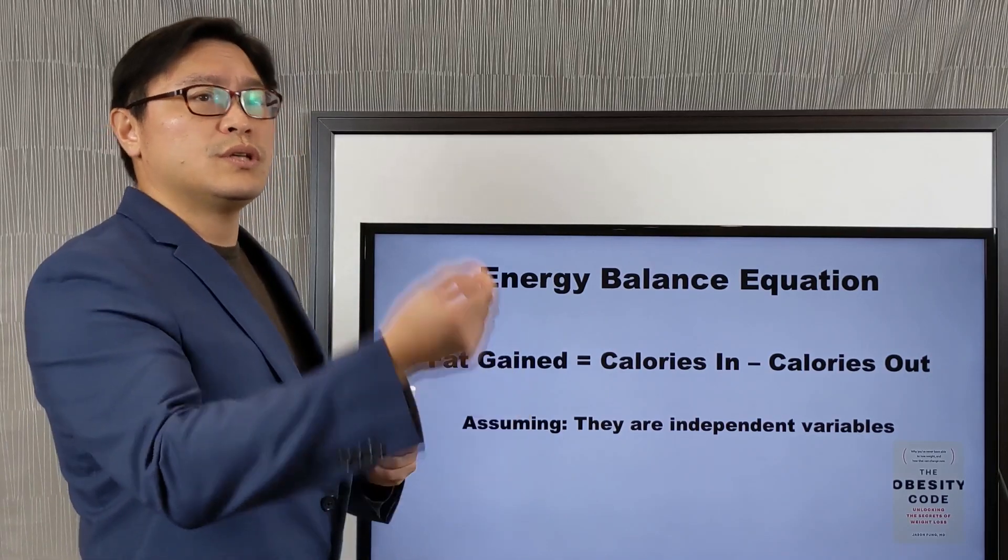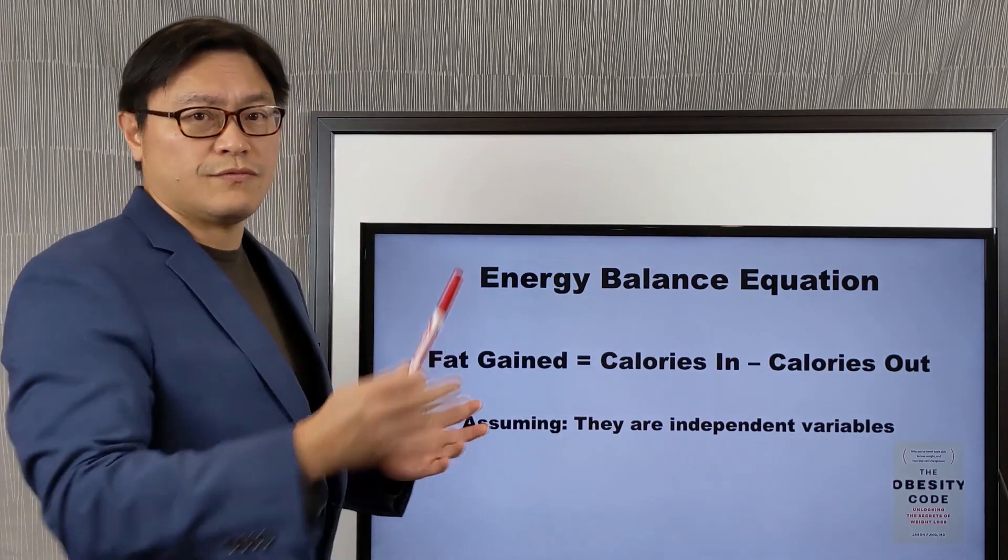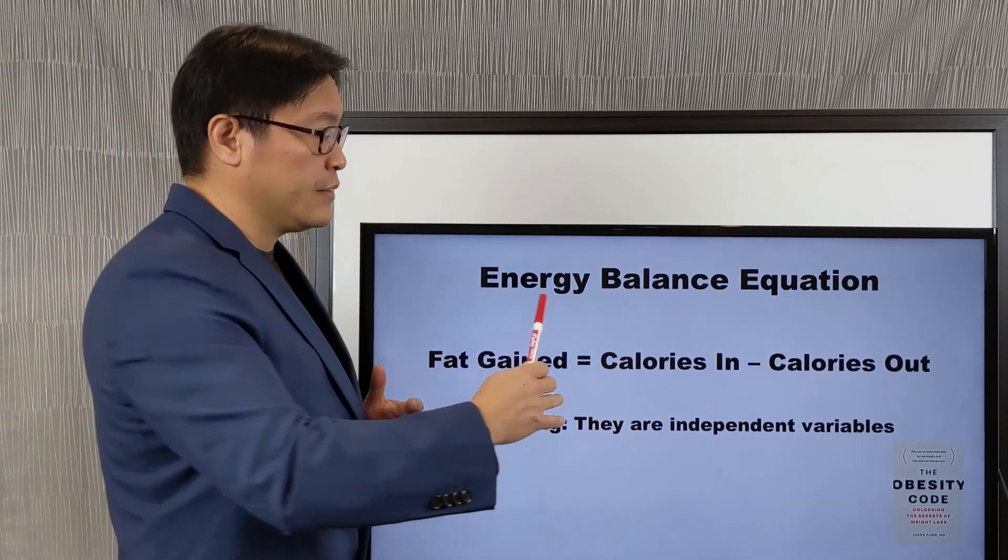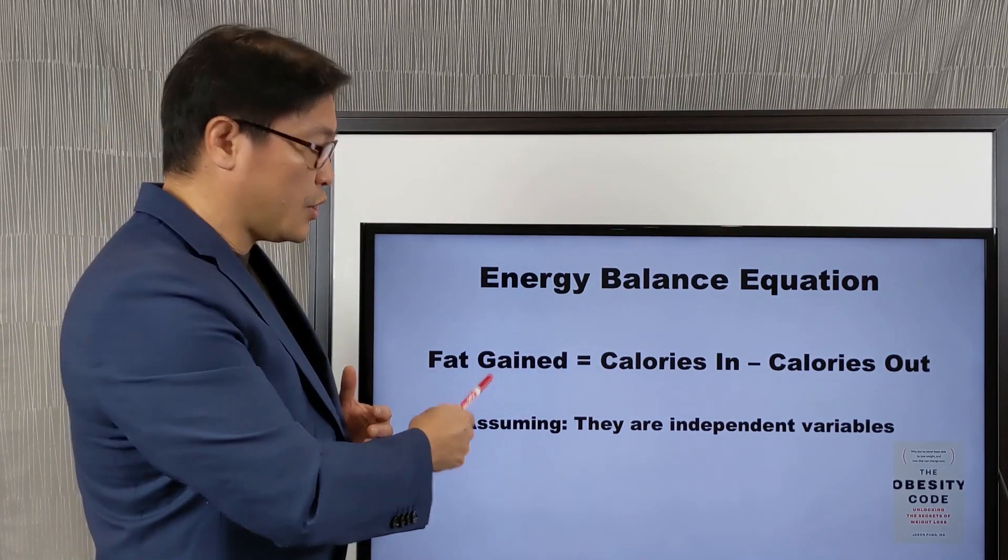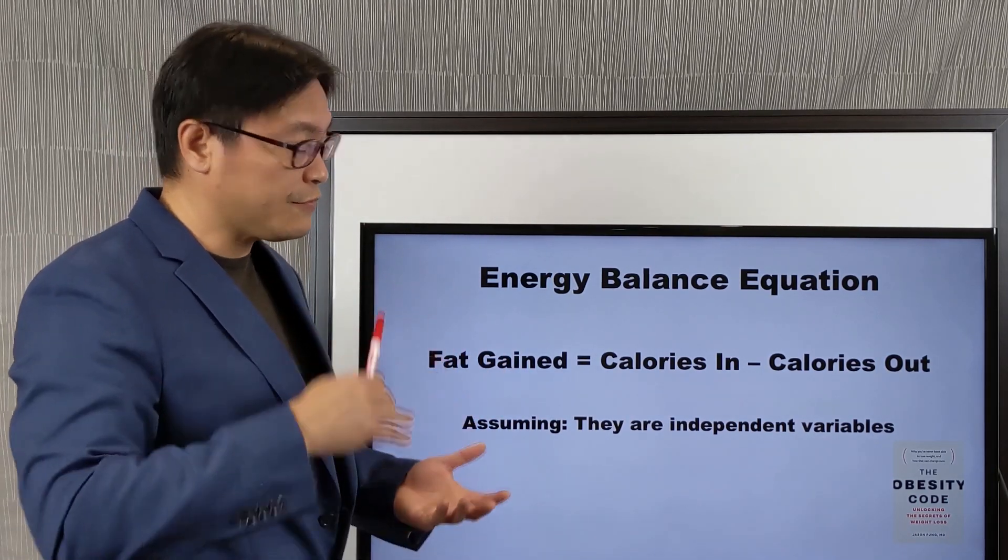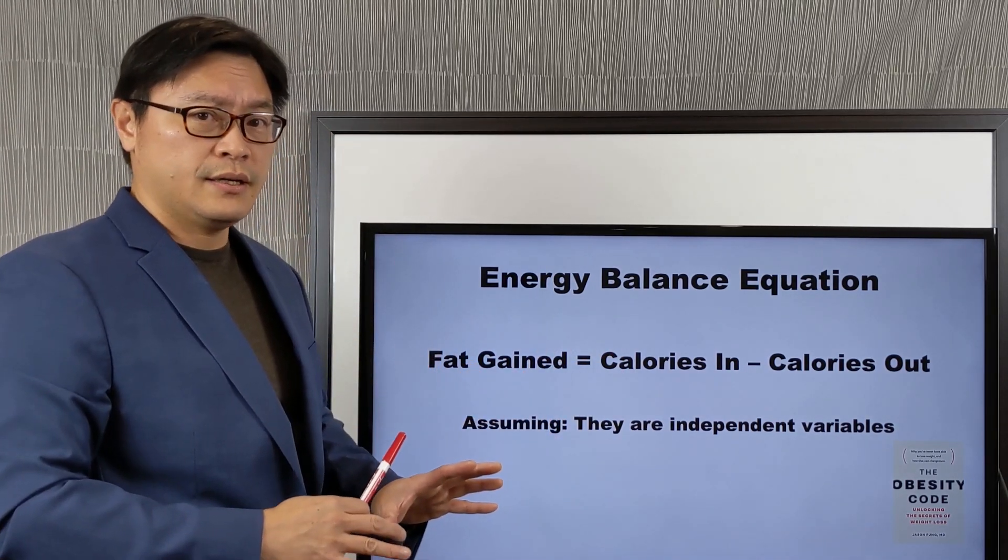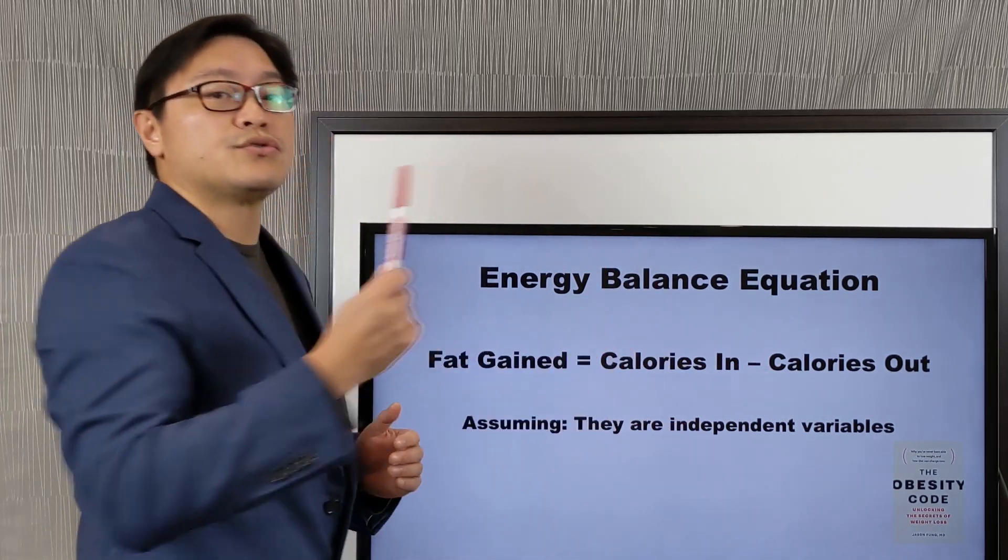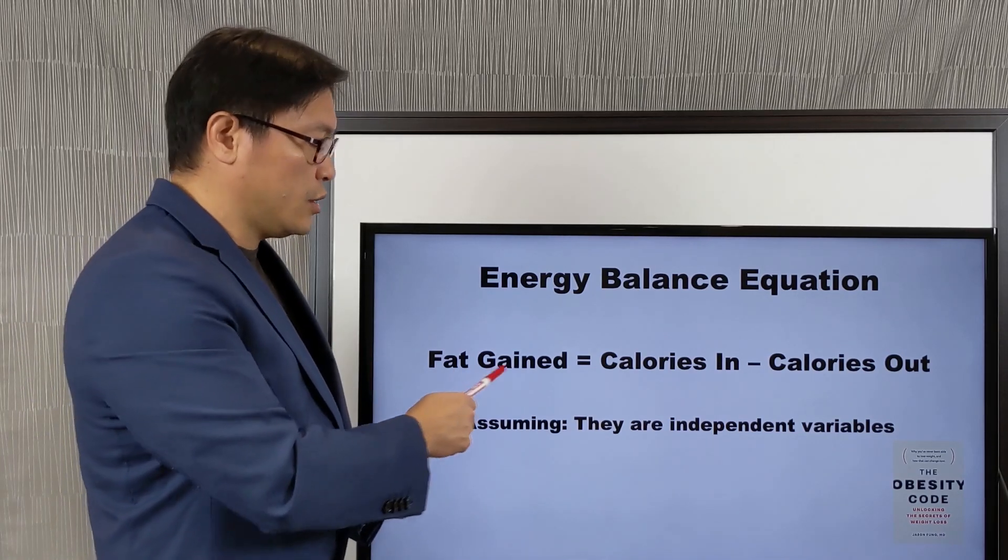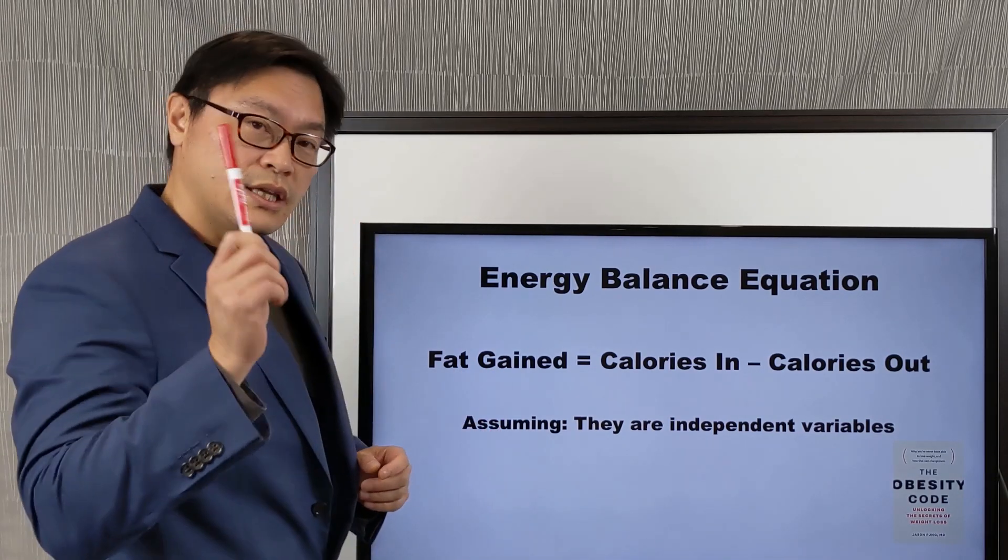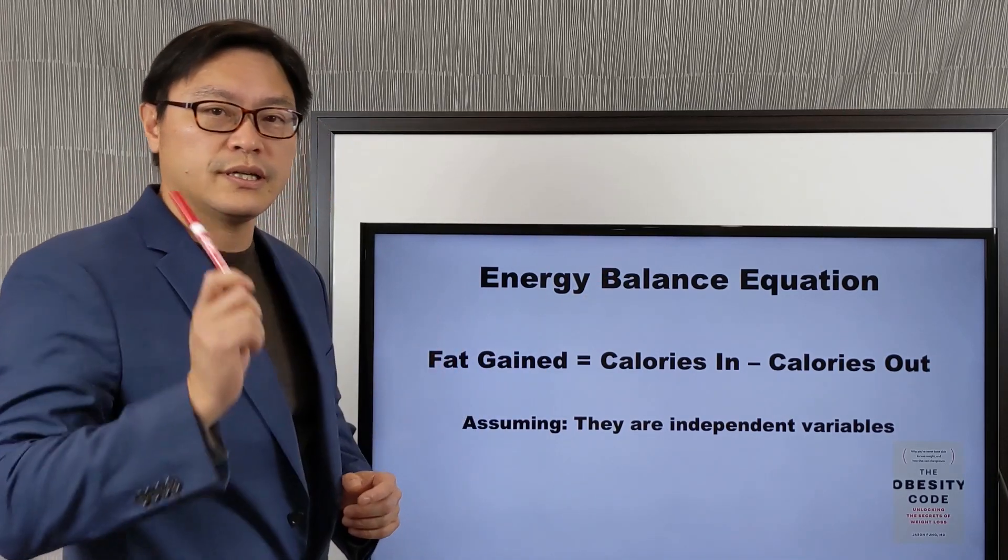That is, calories in is independent of calories out. If what you eat increases the calories out, so assuming you eat 500 more calories but that increases the number of calories you expend by 500, then the body fat gain will be the same. On the flip side, which is what we're usually trying to do when we're trying to lose weight, if you eat 500 less calories in a day but your body responds by reducing the number of calories out by 500, then that will also mean that you're not losing any weight. So the key question is, if this is going to work, are they actually independent variables?